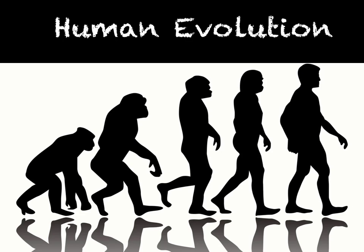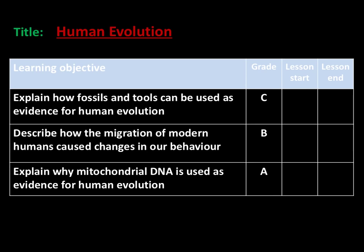This is the ninth video in the Edexcel B3 revision tutorial series. In this video we will be looking over human evolution, including how fossils and tools can be used as evidence, the migration of modern humans and the changes in behaviour this caused, and finally why mitochondrial DNA can be used as evidence for human evolution.